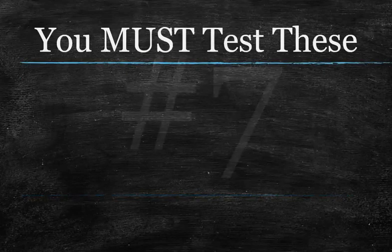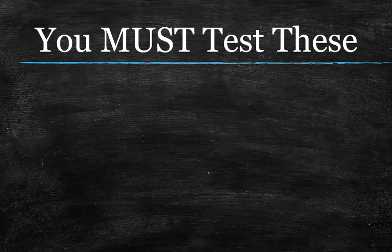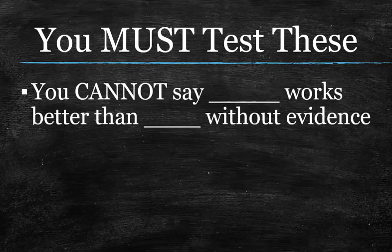Number seven — one of the most important ones we have. You have to test these. If it can't be measured, it doesn't exist. You'll never know if these things are good unless you actually test them.